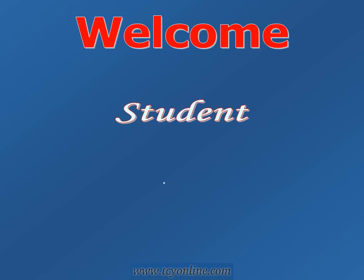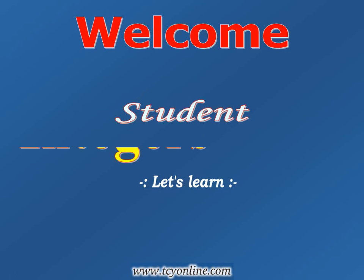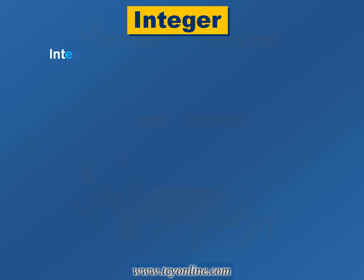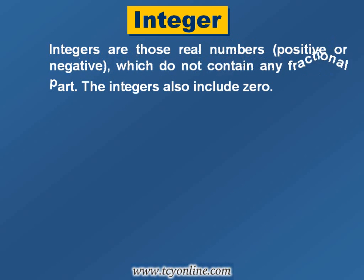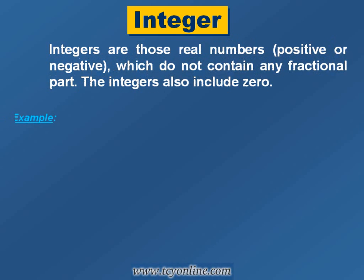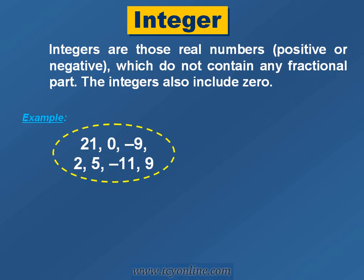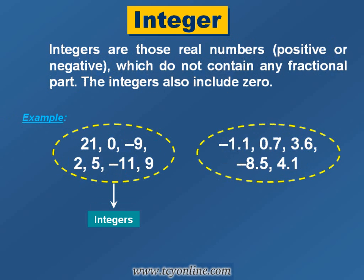Welcome, students. Today we are going to learn about integers. Integers are positive or negative real numbers which do not have a fractional part. Please note that zero is also an integer. For example, 21, 0, negative 9, 25, negative 11, and 9 are all integers, whereas negative 1.1, 0.7, 3.6, negative 8.5, and 4.1 are not integers because they have a fractional part.